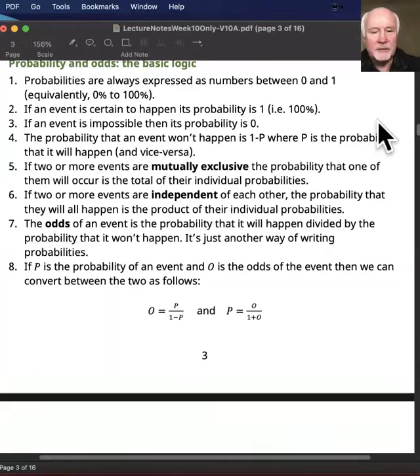If two or more events are independent of each other, in other words they're not mutually exclusive, they're just independent, the probability that they will all happen is the product of their individual probabilities. So if you're a supporter of a football team and you're a supporter of a cricket team, the probability that both of your favorite teams will win is the product of the probabilities for them winning each of the two games.